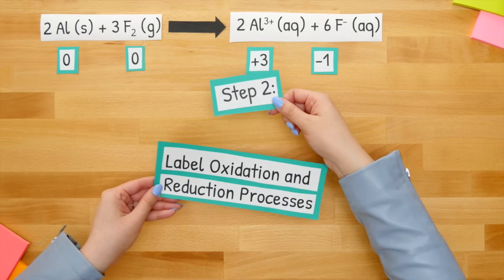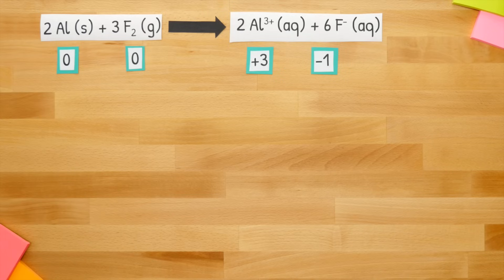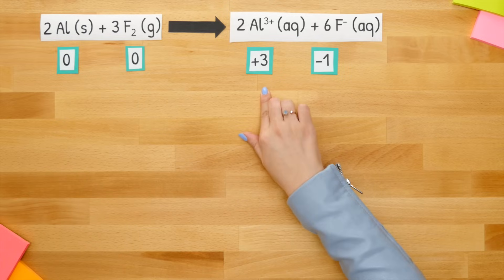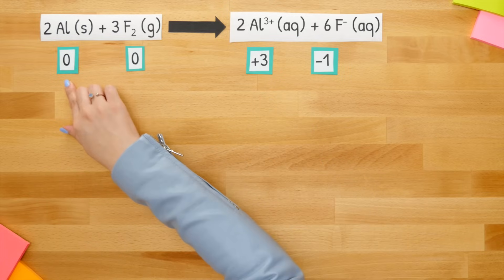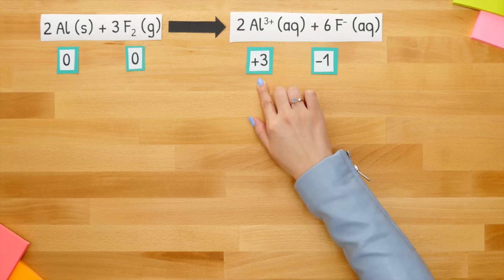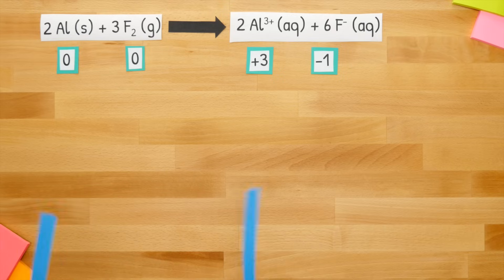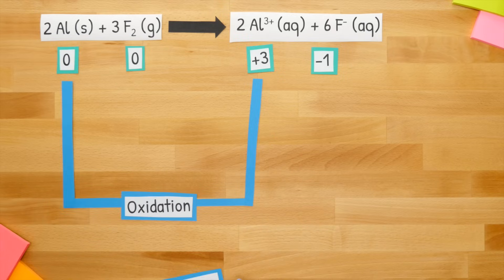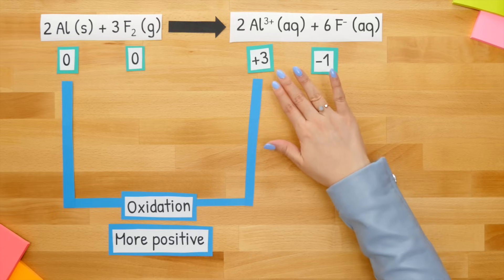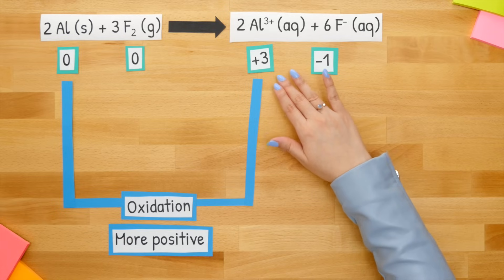Step 2: label oxidation and reduction processes. When labeling oxidation or reduction, what we're focused on is the change of oxidation numbers. Starting with aluminum — it goes from 0 then changes to a positive 3. Because this became more positive, this is oxidation. Oxidation becomes more positive when going from reactant to product, and this happens due to a loss of electrons, since electrons are negatively charged.